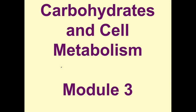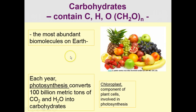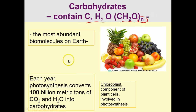Welcome to Module 3. Today we'll be talking about carbohydrates and cell metabolism. Carbohydrates contain three elements — carbon, hydrogen, and oxygen — in the form CH₂O to the N. These are the most abundant biomolecules on Earth, and each year photosynthesis in plants converts 100 billion metric tons of carbon dioxide and water into carbohydrates.